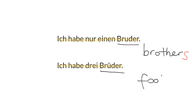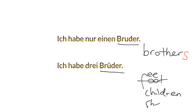There's 'foot', which becomes 'feet'. There's 'child', which adds an R-E-N. There are words like 'sheep' that don't change at all. But really, the S is the plural form in English.